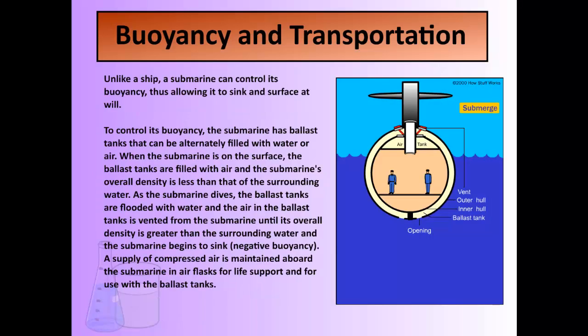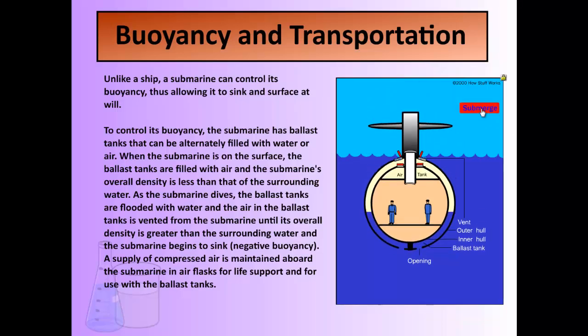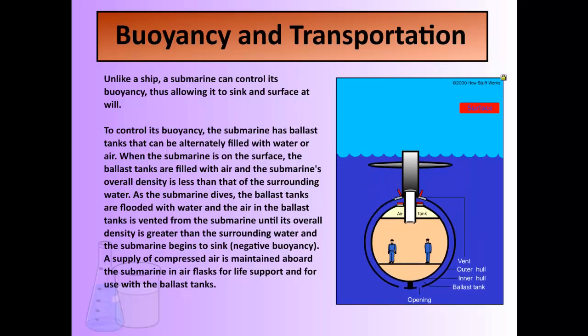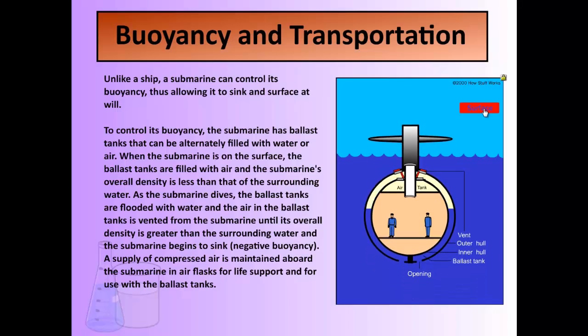Buoyancy and density also apply to submarines. To control a submarine's buoyancy, it has something called ballast tanks. These ballast tanks can alternately fill with water or air depending on where it wants to go. When on the surface, the ballast tanks are full of air because air is less dense than water. As it wants to dive, it fills those ballast tanks with water and the submarine will sink. Compressed air is maintained on board so that if they want to rise again, they force the water out and up they come.